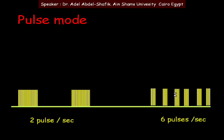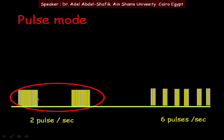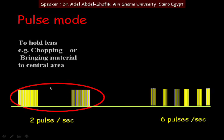Pulse mode can be set to two pulses per second or six pulses per second. At two pulses per second, we have long on and long off periods. The long off period is useful for holding lens material — important for chopping or bringing material to the central pupil area before removal.